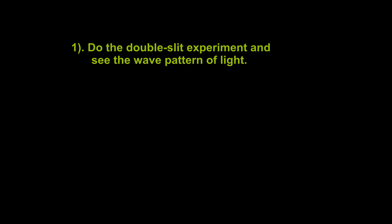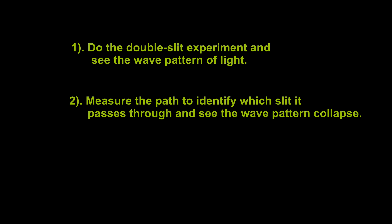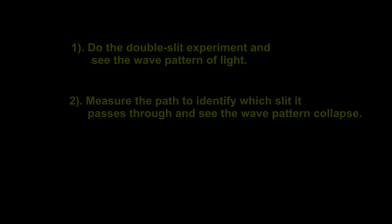First, do the double-slit experiment and see the wave pattern of light. Second, measure the path to identify which slit it passes through and see the wave pattern collapse. Three, erase the which-path information and see the wave pattern again.